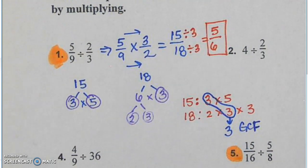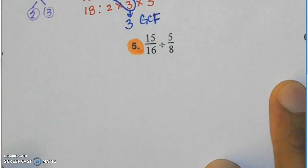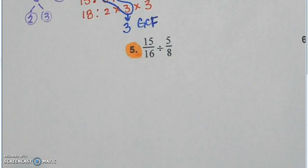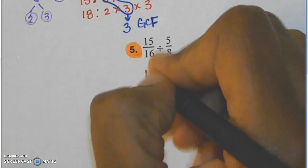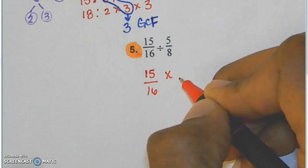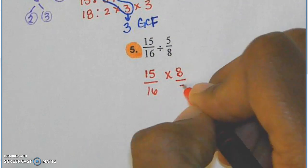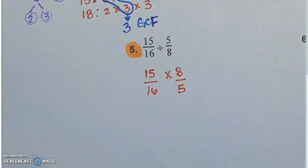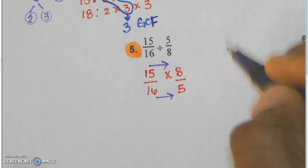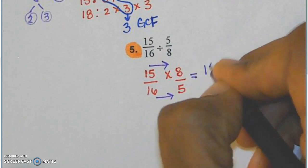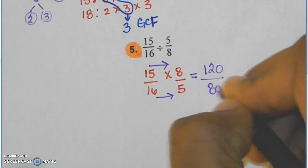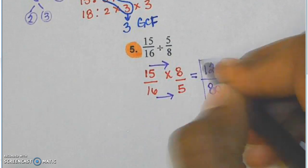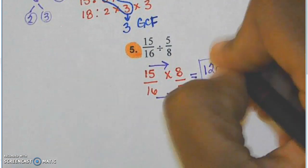Let's go ahead and take a look at number five, which has five sixteenths divided by five eighths. We do not divide fractions — we multiply by the reciprocal. So let's change this into a multiplication expression, and after my multiplication symbol I need to write the reciprocal. Remember, that's when the numerator and denominator switch positions. Once I have my reciprocal, I multiply numerator times numerator and denominator times denominator. 15 times 8 gives me 120, and 16 times 5 gives me 80. This is an improper fraction, so whenever you have an improper fraction you want to make it a mixed number by doing Tybo.